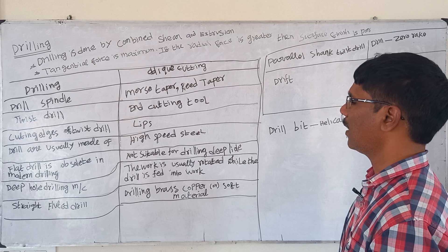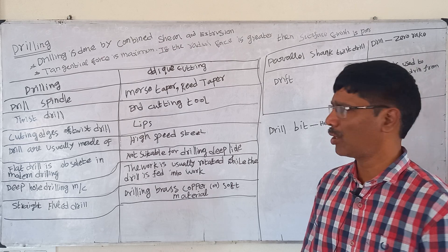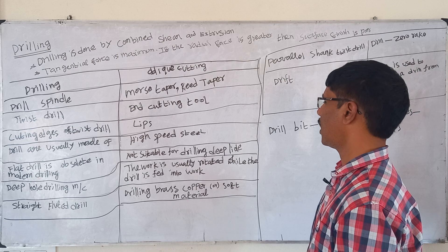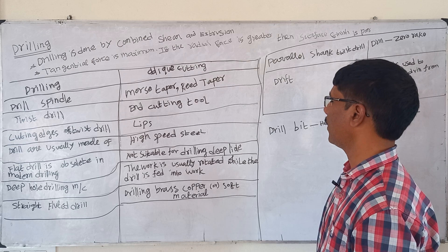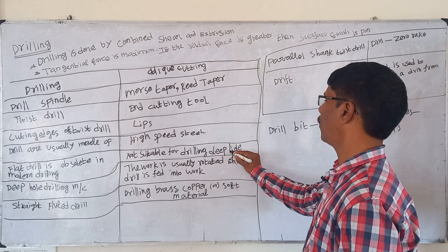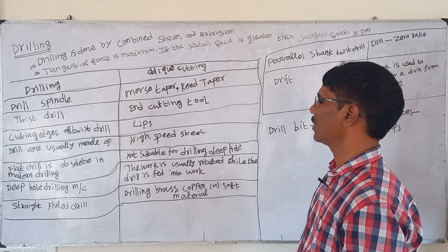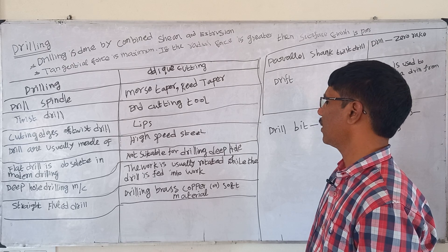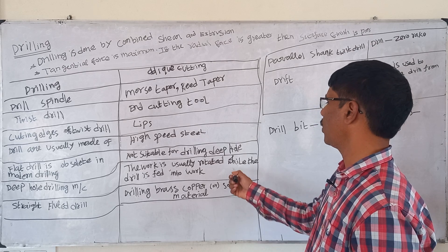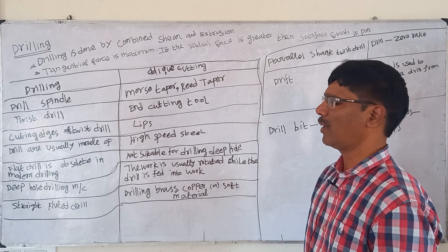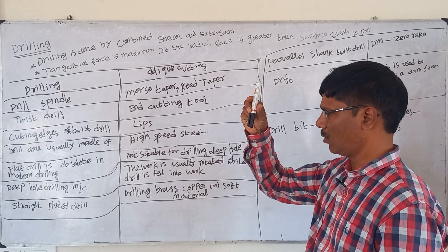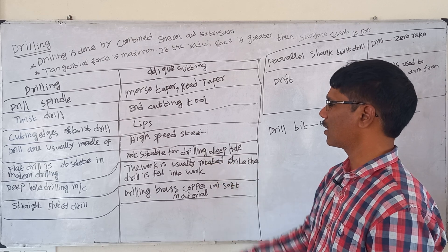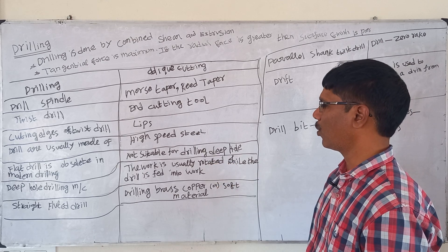A flat drill is now obsolete in modern drilling operations because it is not suitable for drilling deep holes. In deep hole drilling, the work is usually rotated while the drill is fed into the work.